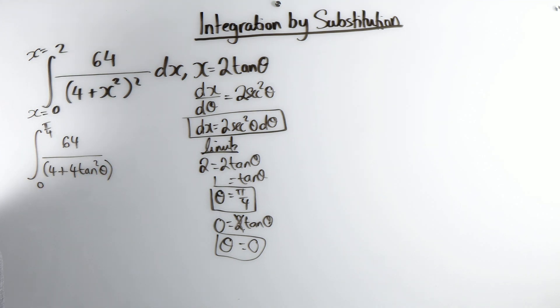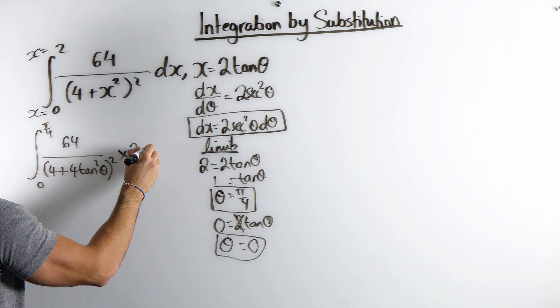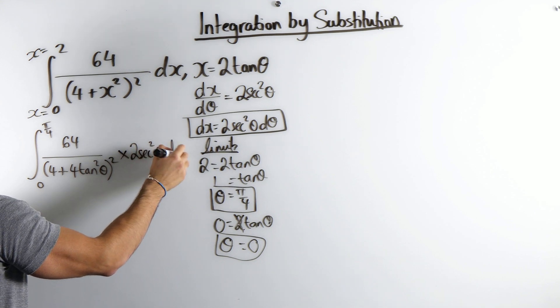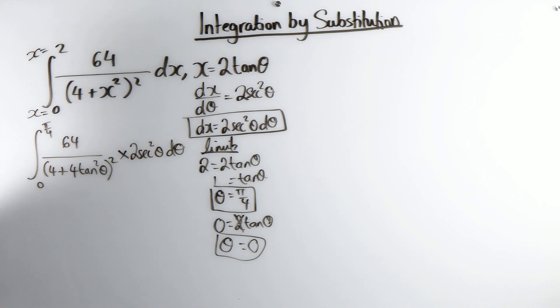And then squared, times 2 sec squared theta d theta. Now what's going on here?